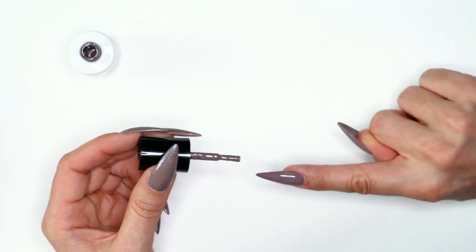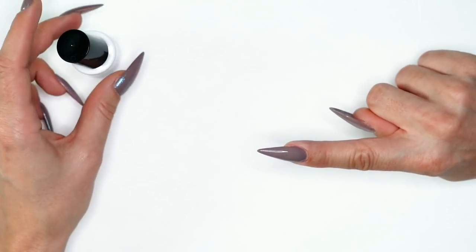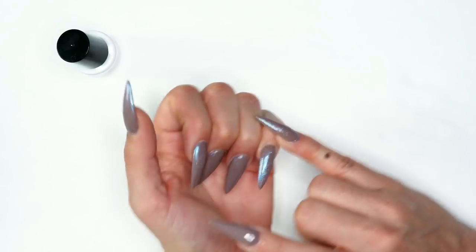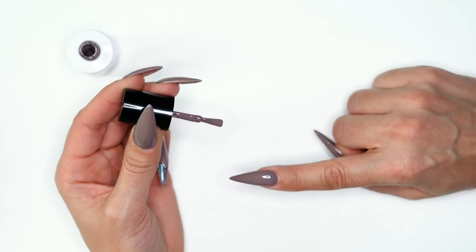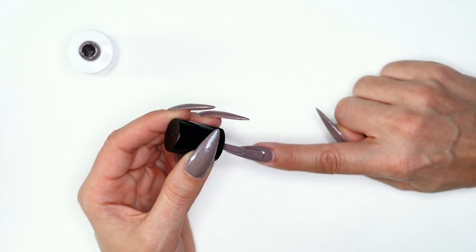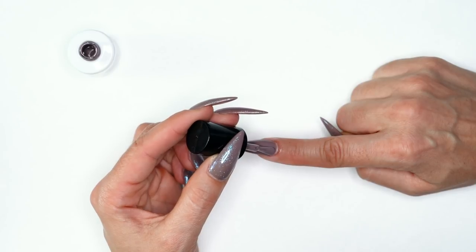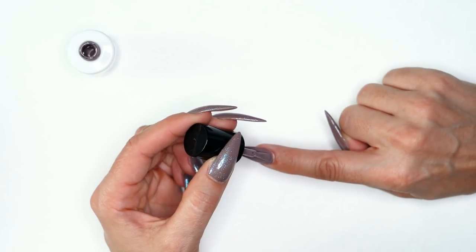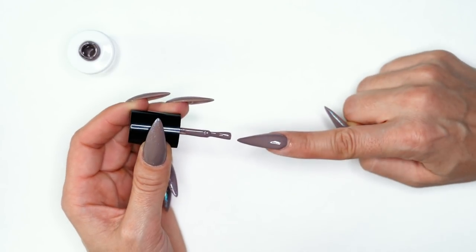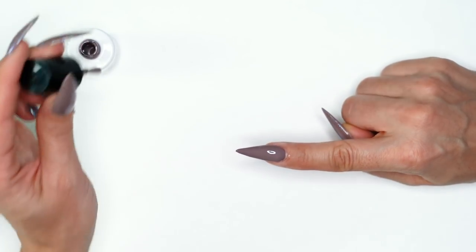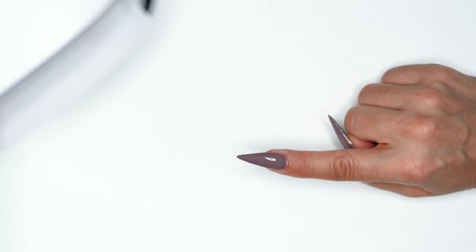Another huge thing with any one of these steps when working on yourself is you want to make sure that you're balancing. Just like usually you're balancing with your pinky, right now while I'm polishing I'm balancing my wrist and my arm so that I'm not shaking and so that I have control of the polish when I'm applying. I do the same when using my electric file or my hand file. I'm trying to balance either on my other hand or on my desk. I'm going to get this in the light for 60 seconds.